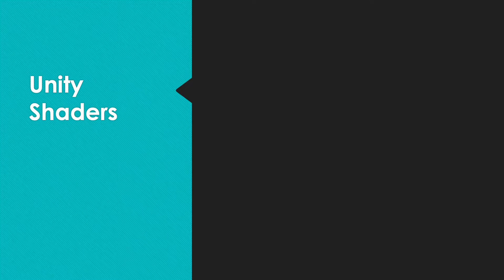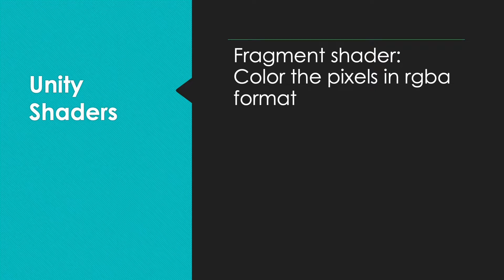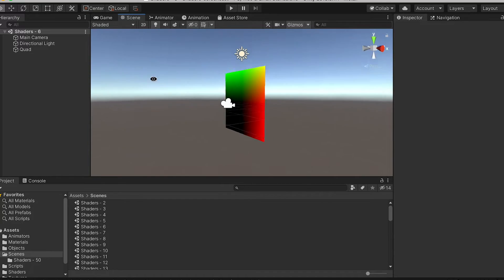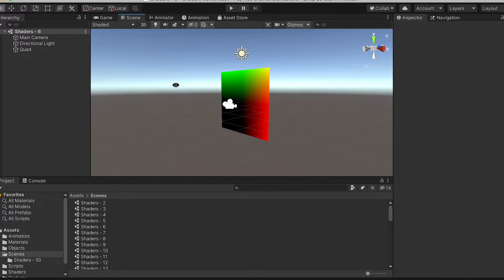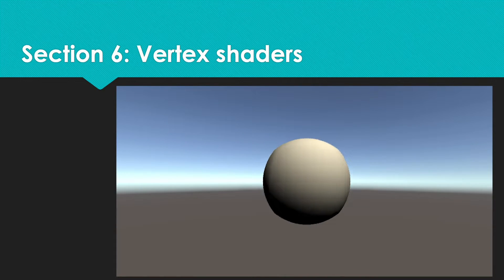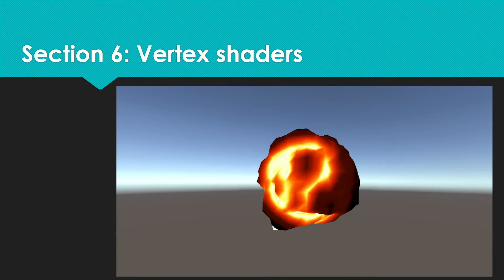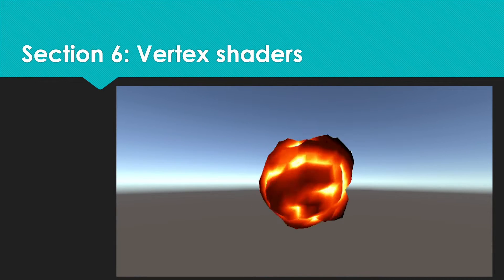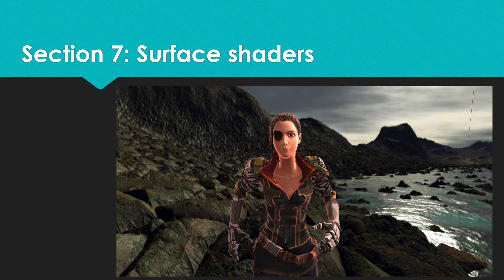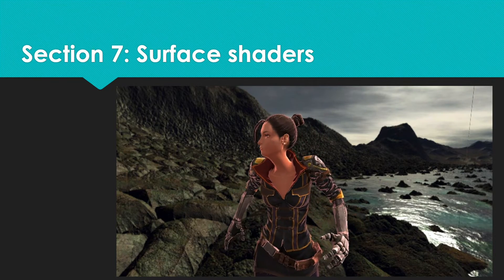Each Unity shader has two components: the fragment shader, which is all about deciding the colour of a pixel, and a vertex shader, which is all about moving a vertex from object space to clip space. In sections 1 to 5 we use a simple quad and just concern ourselves with the fragment shader. Section 6 introduces vertex shaders for the first time, bringing you into the 3D world. If you want to work in 3D then you will probably want to add lighting to your shaders, and Unity makes this as easy as possible using the surface shader option, which is what we look at in section 7.